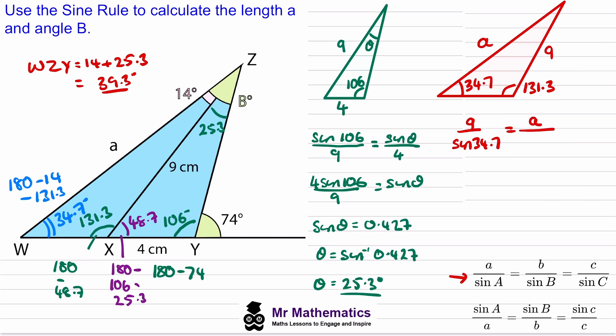So we'll substitute these values into this formula we've got 9 over its opposite angle sine of 34.7 will equal length A over its opposite angle the sine of 131.3.